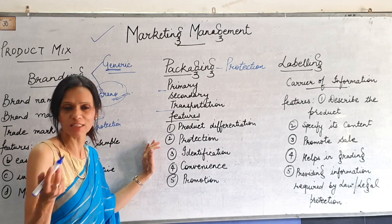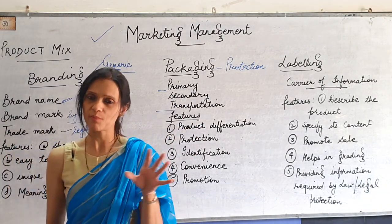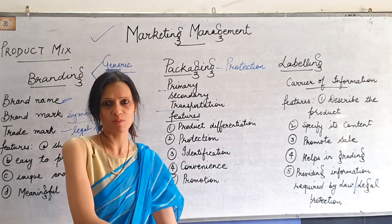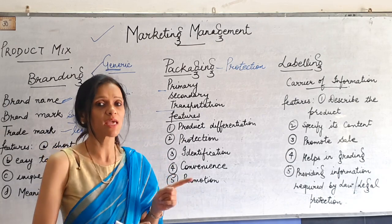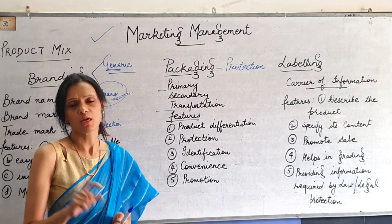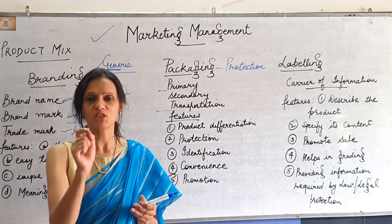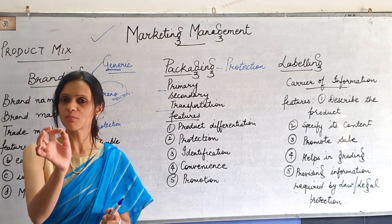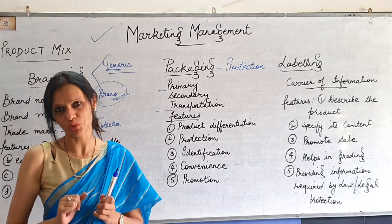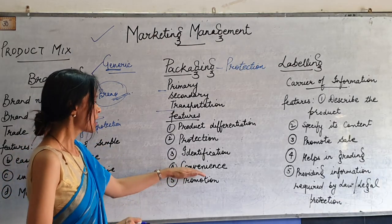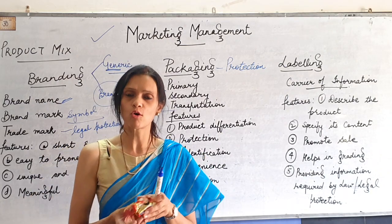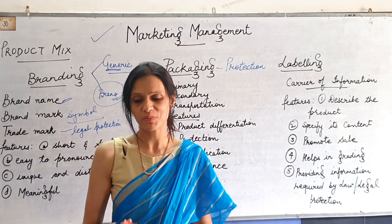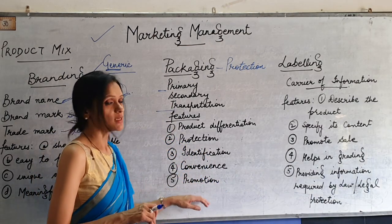Now what are the features of packaging? Number one: product differentiation — packaging helps distinguish your product from competitors. Number two: protection — packaging keeps and protects the product, as with the biscuit in its packet. Number three: identification — the packaging should be attractive, catchy, and colorful so the customer can identify the product. Number four: convenience — if the packaging is too hard to open without scissors, customers will avoid it. So packaging should be easy to open. And the last is promotion.